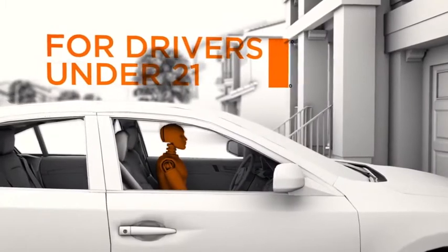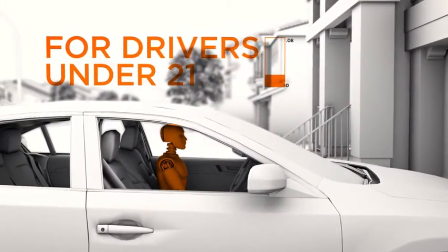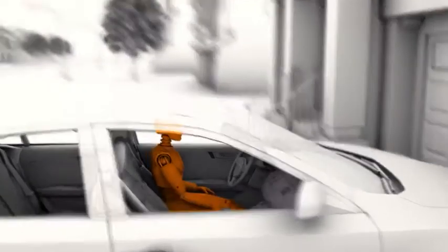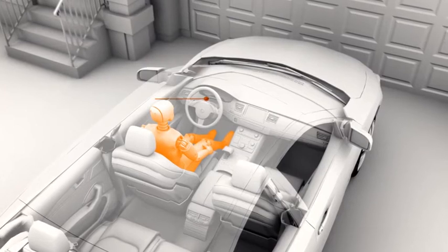For drivers under 21, for whom any amount of blood alcohol is illegal, the system can be programmed for a zero tolerance policy. To get an accurate, reliable reading, two technologies are being explored: